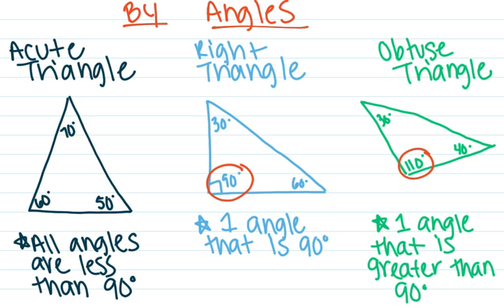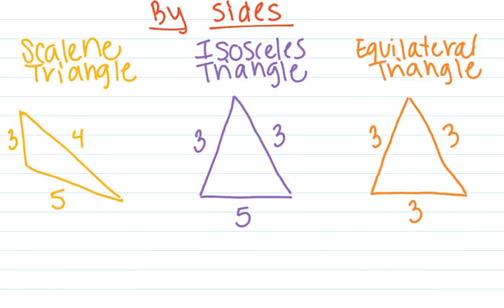We can also classify triangles by their sides, looking at how long the different sides are. There are three classifications for that. A scalene triangle has no equal sides. As you see here, the sides are three, four, and five — all the sides are different. That would be a scalene triangle by sides.